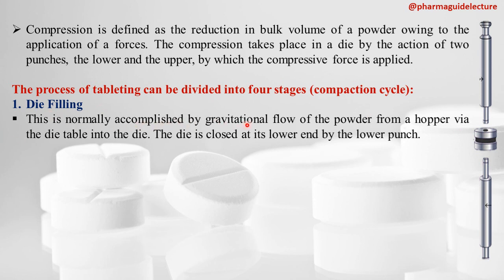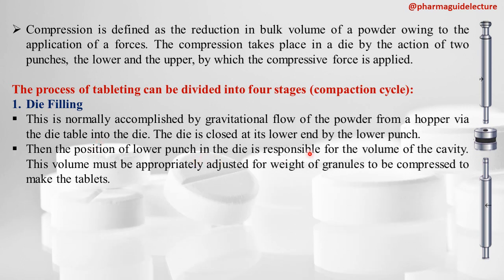Die filling is normally accomplished by the gravitational flow of the powder from a hopper via the die table into the die. The die is closed at the lower end by the lower punch. The position of the lower punch in the die is responsible for the volume of the cavity — it determines how much granules are filled. The volume must be appropriately adjusted for the weight of the granules to be compressed.